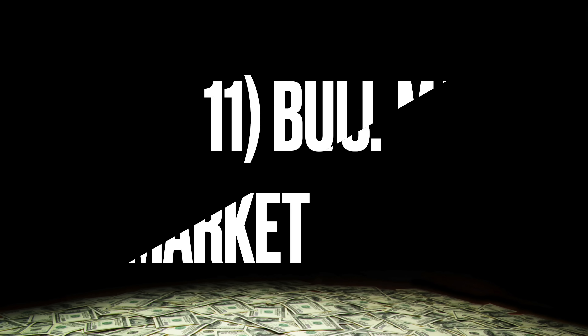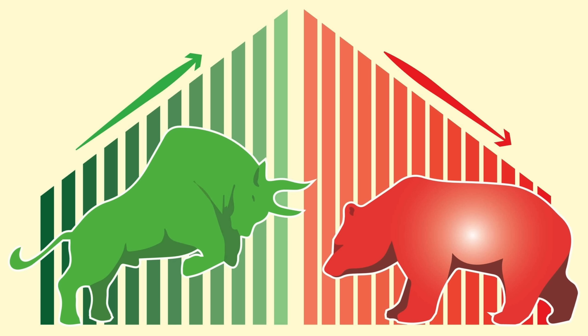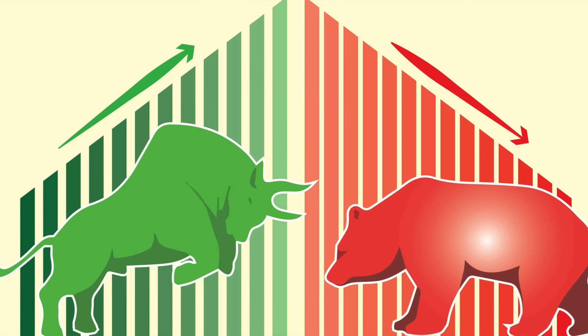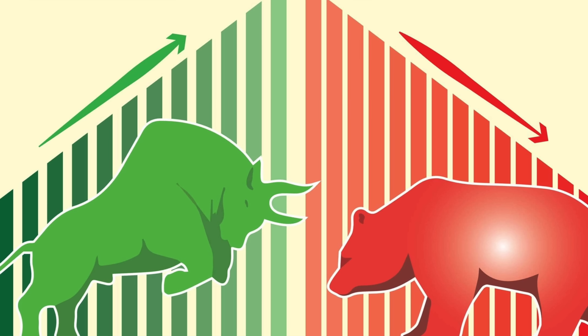What about the difference between a bull market and a bear market? Very simply: bull market means positive or the market is going up. Bear market means bad or the market is going down.